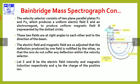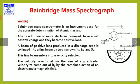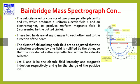The velocity selector consists of two plane parallel plates P1 and P2, which produce a uniform electric field E. A magnetic field is also applied to produce a uniform magnetic field, represented by dotted circles. These two fields are at right angles to each other and to the direction of the beam.